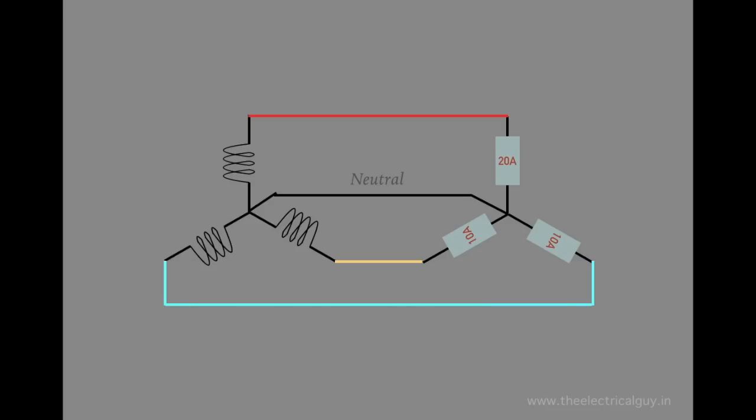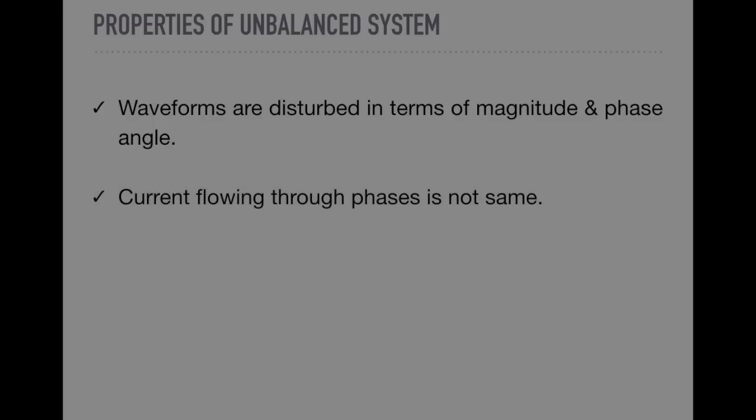Let's check out the properties of an unbalanced system. Waveforms are disturbed in terms of magnitude and phase angle. Current flowing through phase is not same. Neutral is needed. Power losses are more.